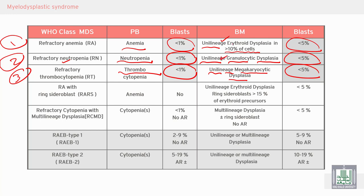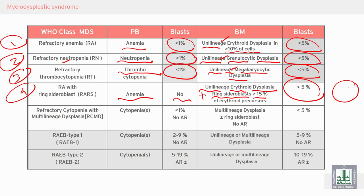Condition four: refractory anemia with ringed sideroblasts — anemia with blasts less than 1% in the peripheral blood and less than 5% in the bone marrow. Unilineage erythroid dysplasia like the first condition, but with ringed sideroblasts more than 15%. Here is the erythroblast, here is the nucleus of the erythroblast, and here are the siderotic granules around the nucleus, arranged in the form of a ring — ringed sideroblasts in the erythroid precursors in the immature erythroid series.